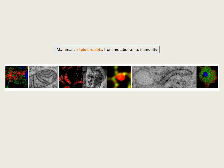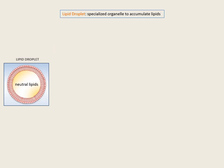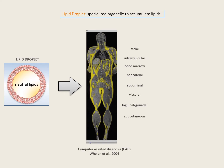First of all, I would like to start with a brief introduction of the organelle we are interested in: the lipid droplet. Cells have developed a specialized organelle to accumulate lipids, the lipid droplet, and organisms have a specialized tissue to store them, the adipose tissue.